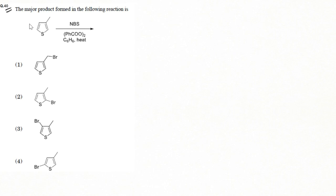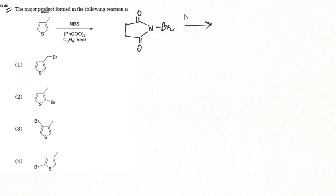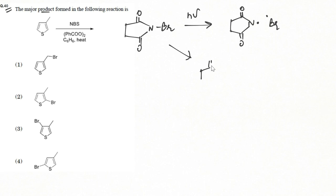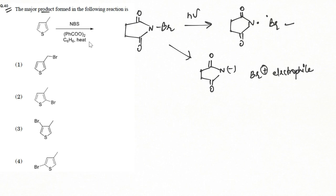This was question 40 in Section B. The next question asks for the major product formed when thiophene reacts with NBS — N-bromosuccinimide. We see two types of behavior for NBS: if it reacts in the presence of light, the N–Br bond breaks homolytically generating radicals; if it breaks in the presence of heat or under normal conditions, it breaks heterolytically generating a bromine electrophile.